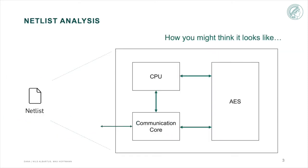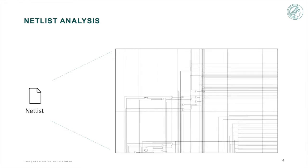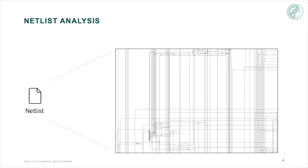one might think that we actually start with something like this, where we see all the module boundaries, see how different modules are connected to each other and what they do. But in reality, we start with something we like to call the Sea of Gates, a flattened netlist with no module boundaries or any higher-level information available.